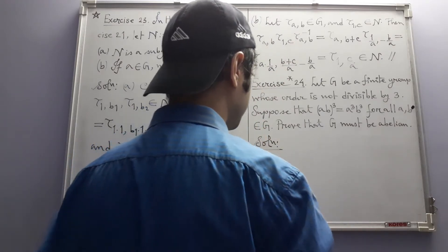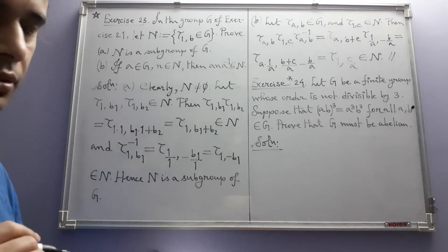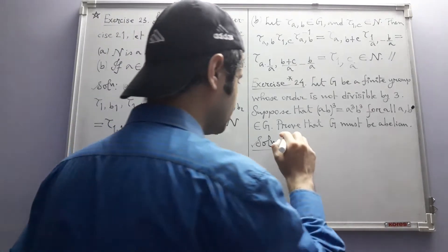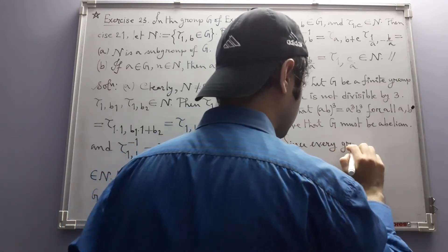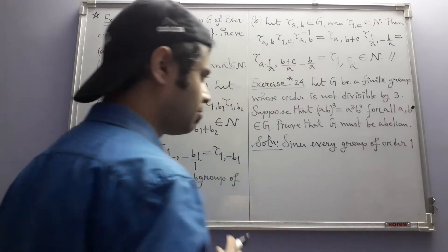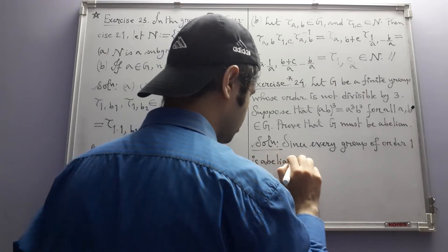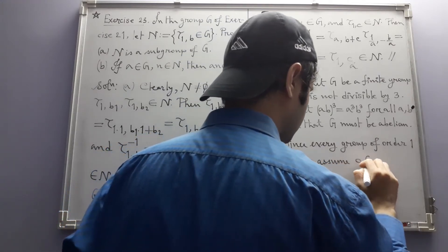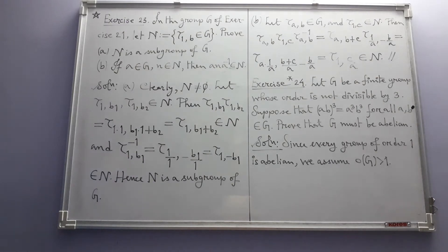Since every group of order 1 is abelian, we can assume G has order at least 2, meaning there is at least one non-identity element. We want to find how to use the given equation to prove G is abelian.